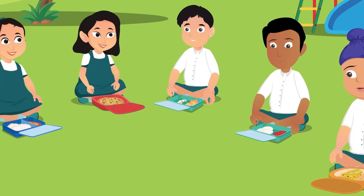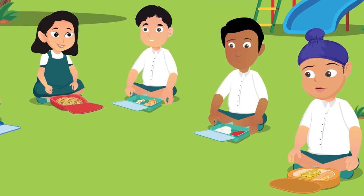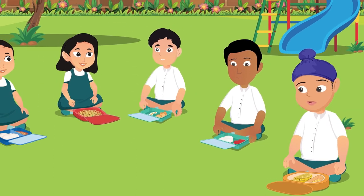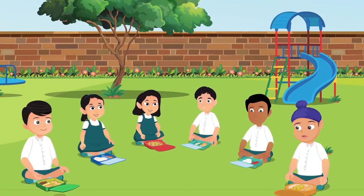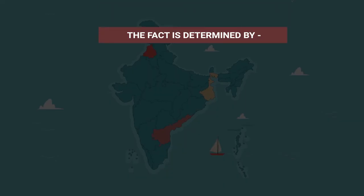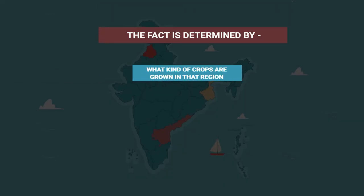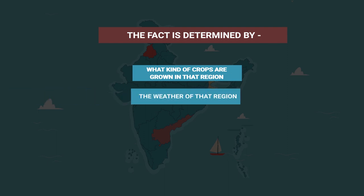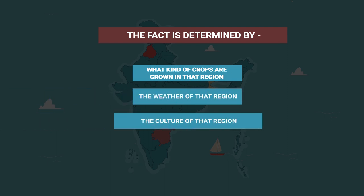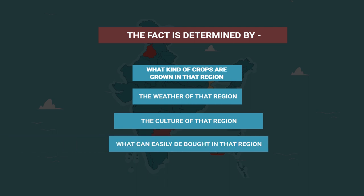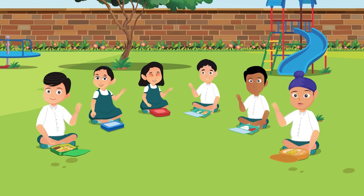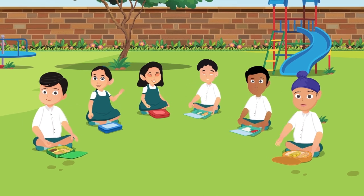So children, today we learned that different kinds of food are consumed in different parts of India and the world. The factors which determine what kind of food is consumed in a region include: what crops are grown there, the weather of the region, the culture of the region, and what can easily be bought there. We will meet again soon with another interesting lesson for you.